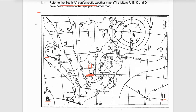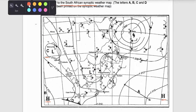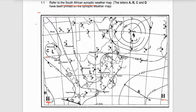Number two: the position of these high pressure cells — the South Atlantic high pressure cell as well as the South Indian high — are moved downwards in summer. In winter they move upwards in position, but in summer they move downwards.